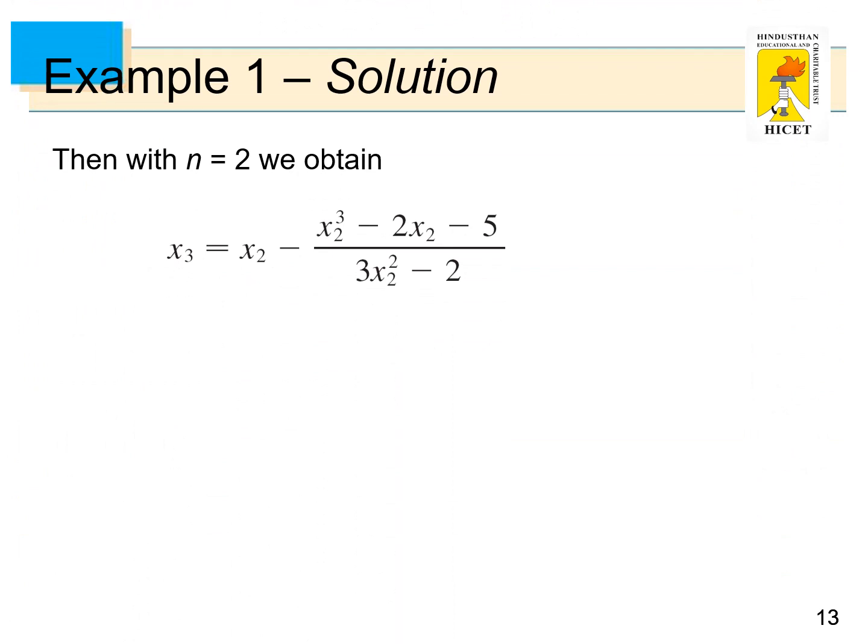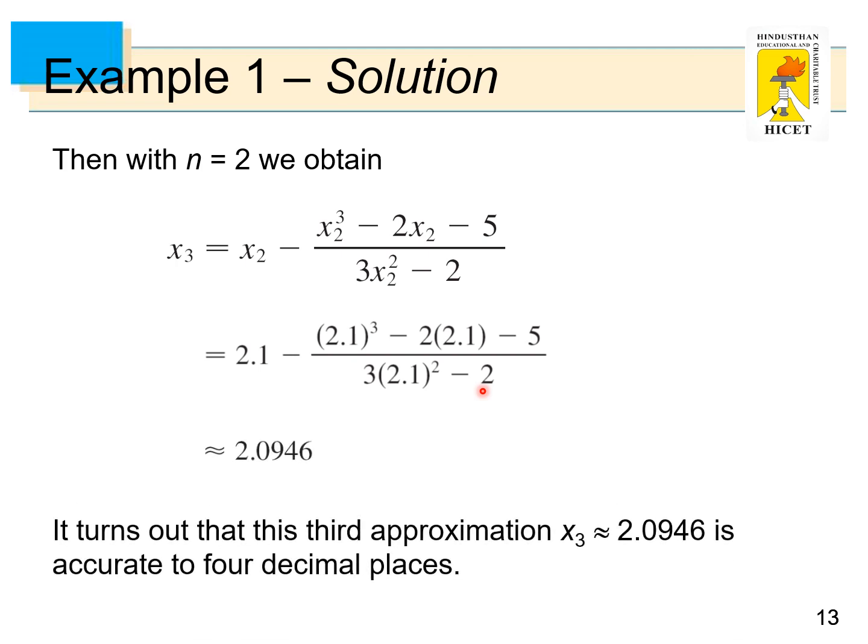Then with n = 2, we obtain x3 = x2 - (x2^3 - 2x2 - 5)/(3x2^2 - 2). x2 is replaced by 2.1, that is 2.1 - (2.1^3 - 2(2.1) - 5)/(3(2.1)^2 - 2). It turns out that this third approximation x3 = 2.946 is accurate to 4 decimal places.